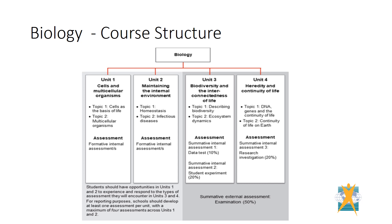Biology consists of four units. Unit 1 and 2 are formative and Unit 3 and 4 are summative. Unit 1 and 2 relate to cells and multicellular organisms and maintaining the internal environment. Unit 3 and 4 relate to biodiversity and the interconnectedness of life, heredity and continuity of life.